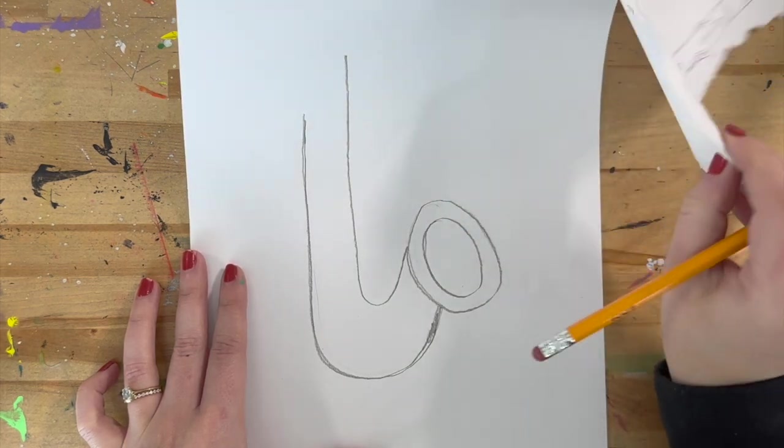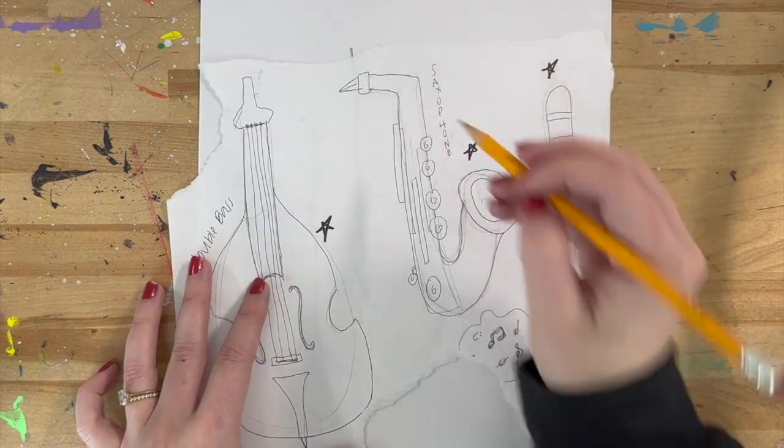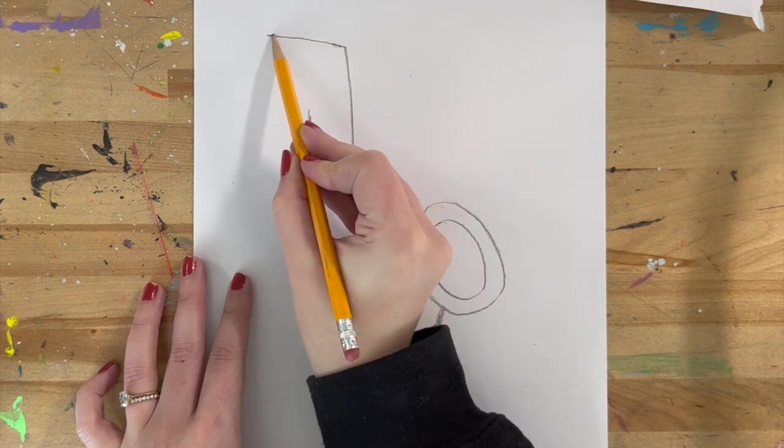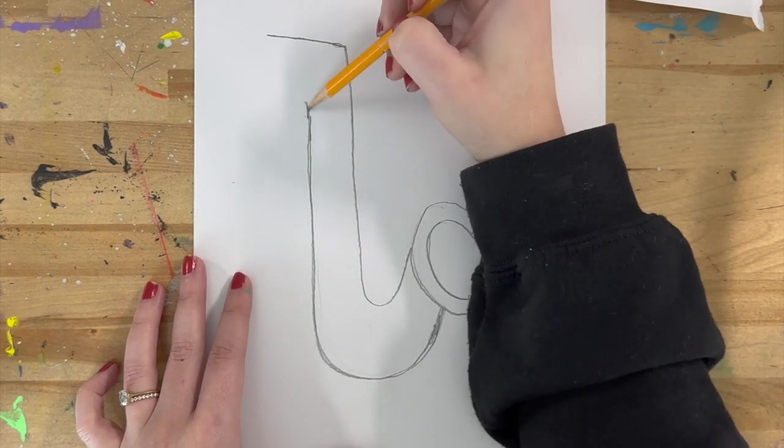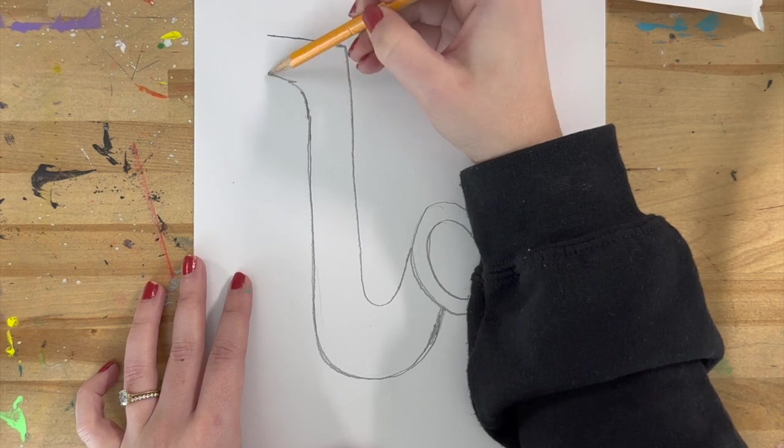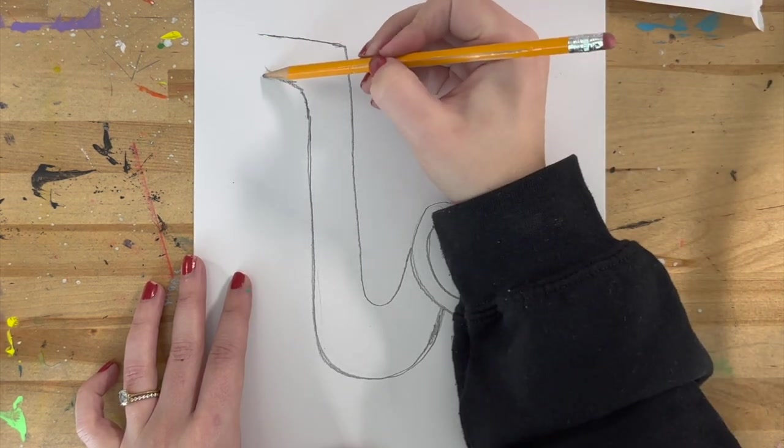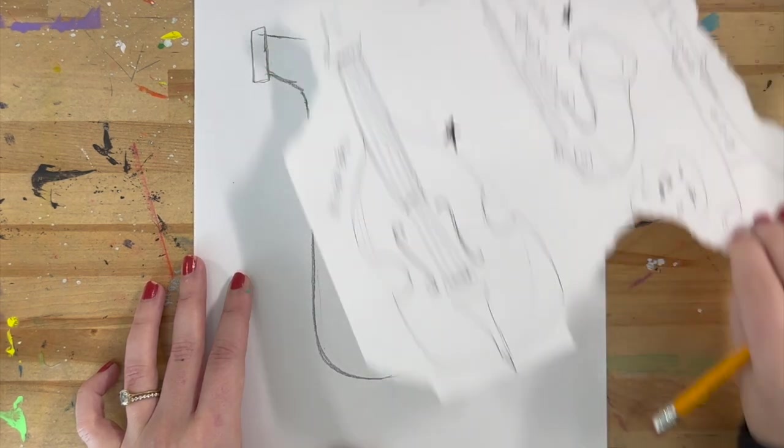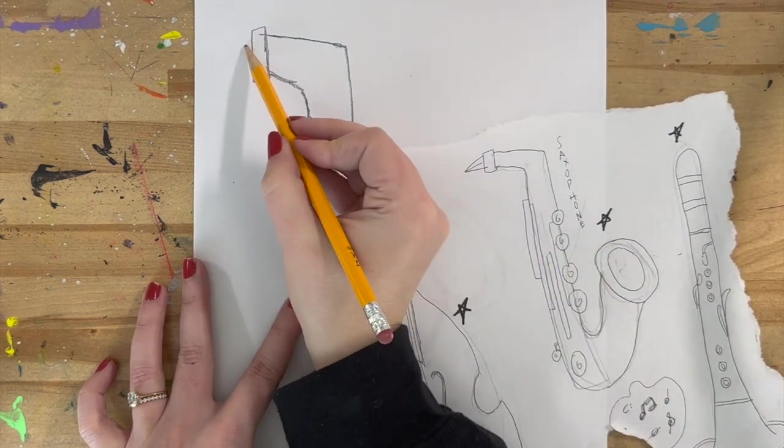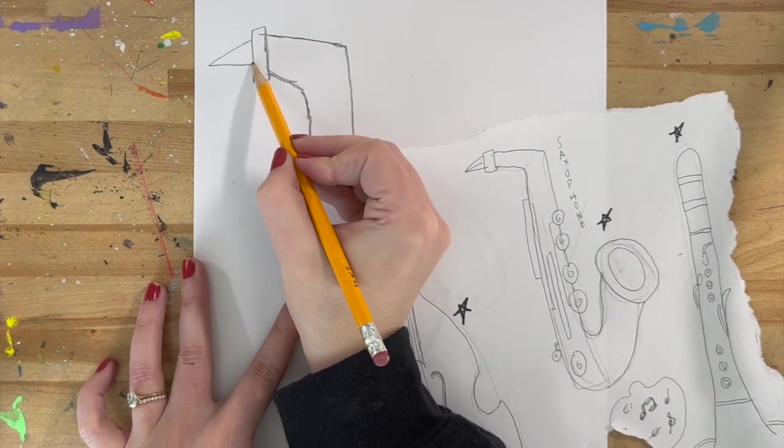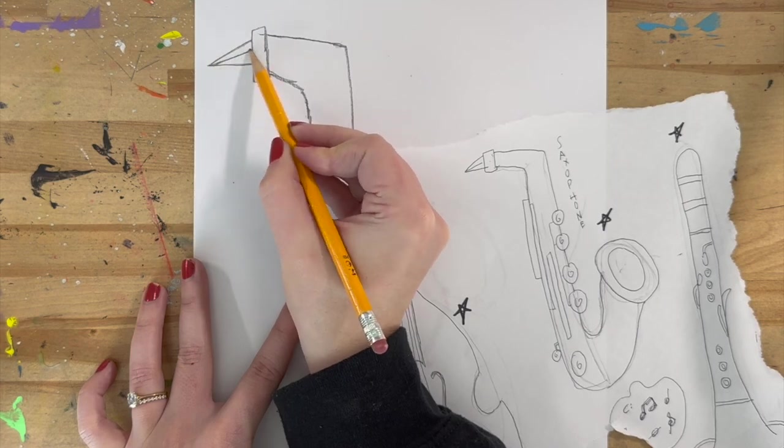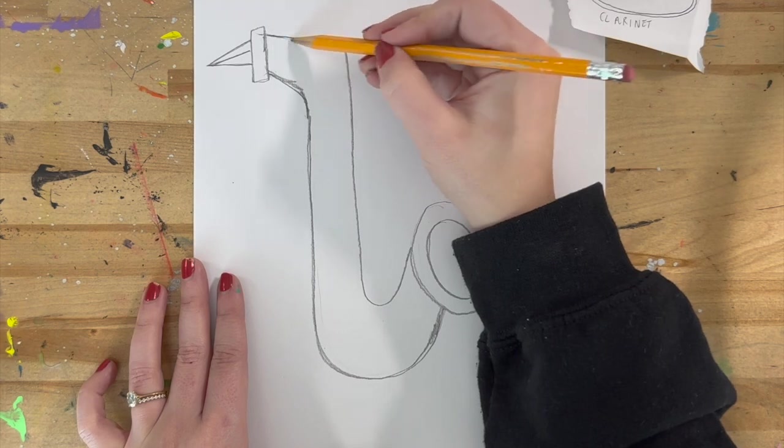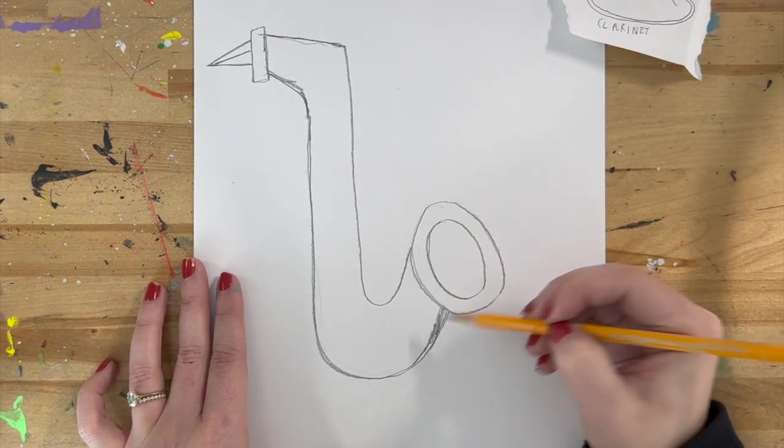Now we're going to draw the mouthpiece of the saxophone and we can break that down into simple shapes as well. Line going that way and line going that way and line going that way. So you would blow in to the saxophone. All right. So now we have the basic shape of the saxophone done.